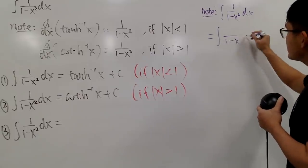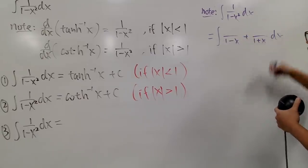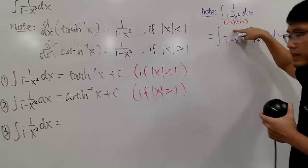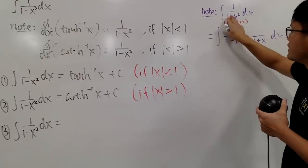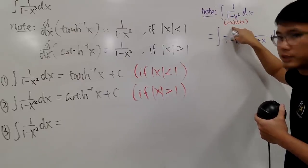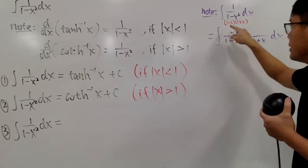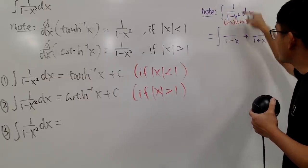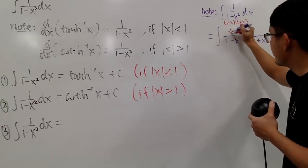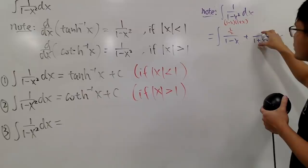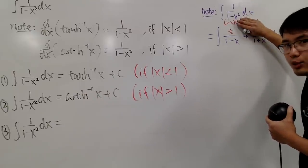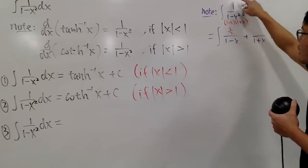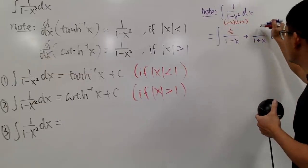If you really want to integrate 1 over 1 minus x squared dx without using inverse hyperbolic trig functions, do the following: factor the denominator to get 1 minus x times 1 plus x, and then use the cover-up method. To find the constant over 1 minus x, cover that factor up, set 1 minus x equal to 0, so x equals 1. Plugging in gives 1 over 1 plus 1, which is one-half. For the constant over 1 plus x, cover that factor up, set x equal to negative 1. That gives 1 over 1 minus negative 1, which is 1 over 2 again. So both constants are one-half.